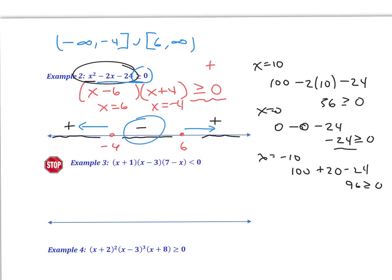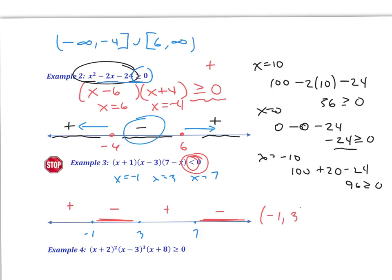Now that you've had some time, hopefully you got x equals negative 1, x equals 3, and x equals 7. On your number line you have negative 1, 3, and 7. Testing points: anything greater than 7 is negative, anything between 3 and 7 is positive, anything between negative 1 and 3 is negative, and anything below negative 1 is positive. Since we want where it is less than 0, we want between negative 1 and 3, and greater than 7. Because it doesn't have the equal to part, I'm only using parentheses — so the solution is negative 1 to 3, union, 7 to positive infinity.